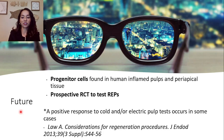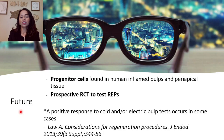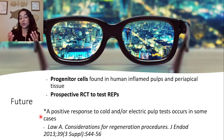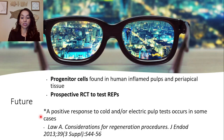Where are we headed in terms of the future? Progenitor cells have been found in human inflamed pulps and periapical tissues, which may play a role in future regenerative endodontic procedures. Much of the literature involves case series and case reports, so prospective randomized control trials are needed. A paper from 2013 found positive responses to cold and electric pulp tests in some cases — really the end goal of taking a tooth in a state of necrosis and making it vital again.